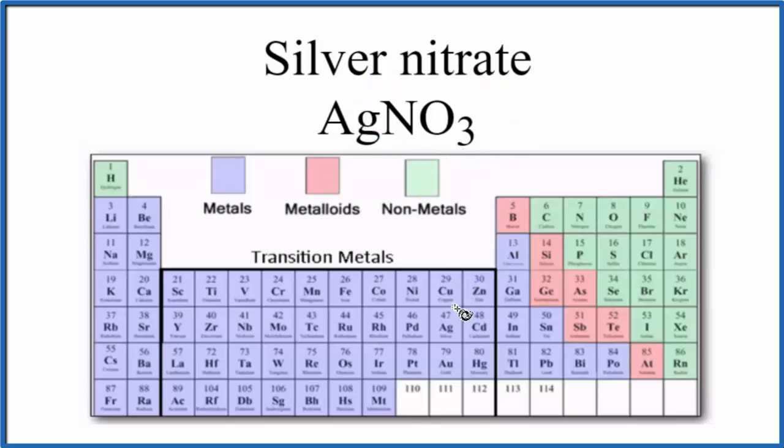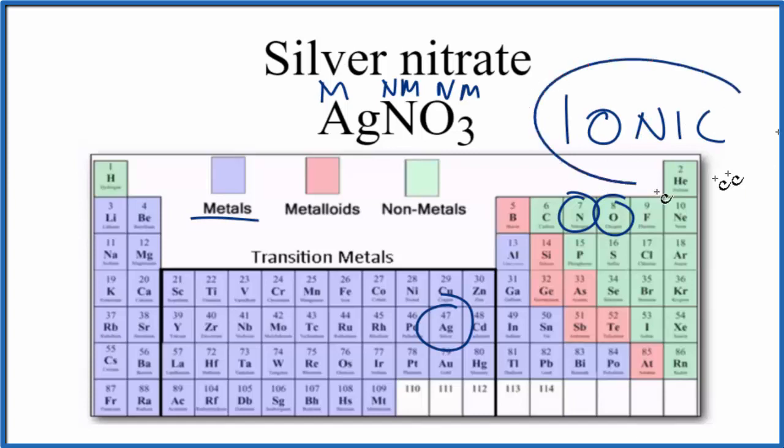So on the periodic table, right here is silver. See it's a metal, and then nitrogen and oxygen. Those are both non-metals. So we have a metal and non-metals. When we have metal and non-metals, it's almost always going to be an ionic bond.